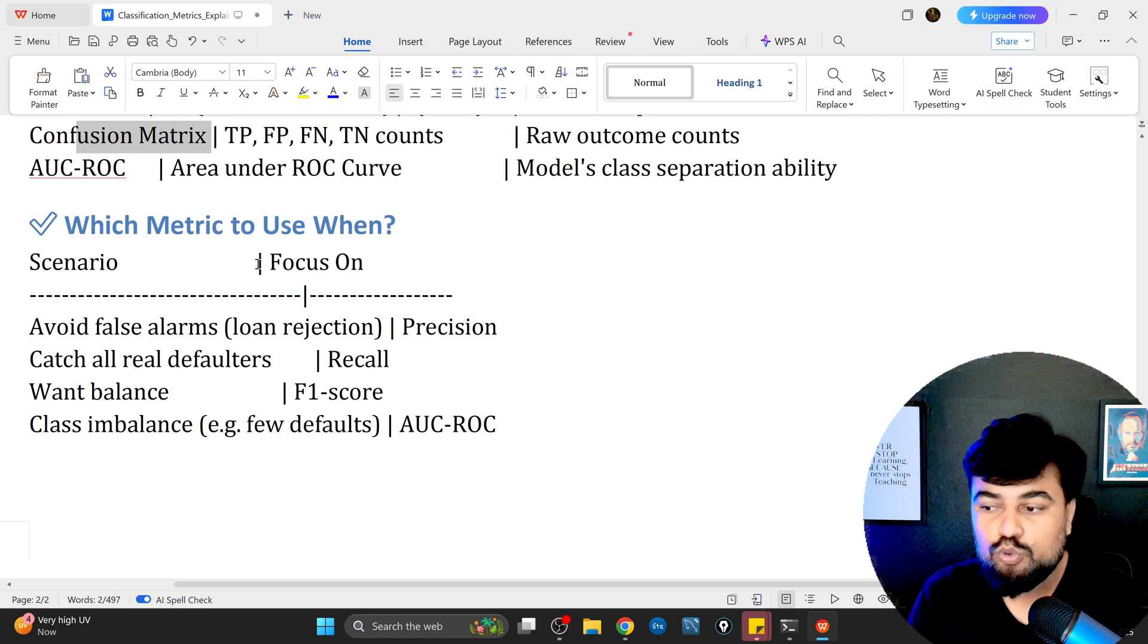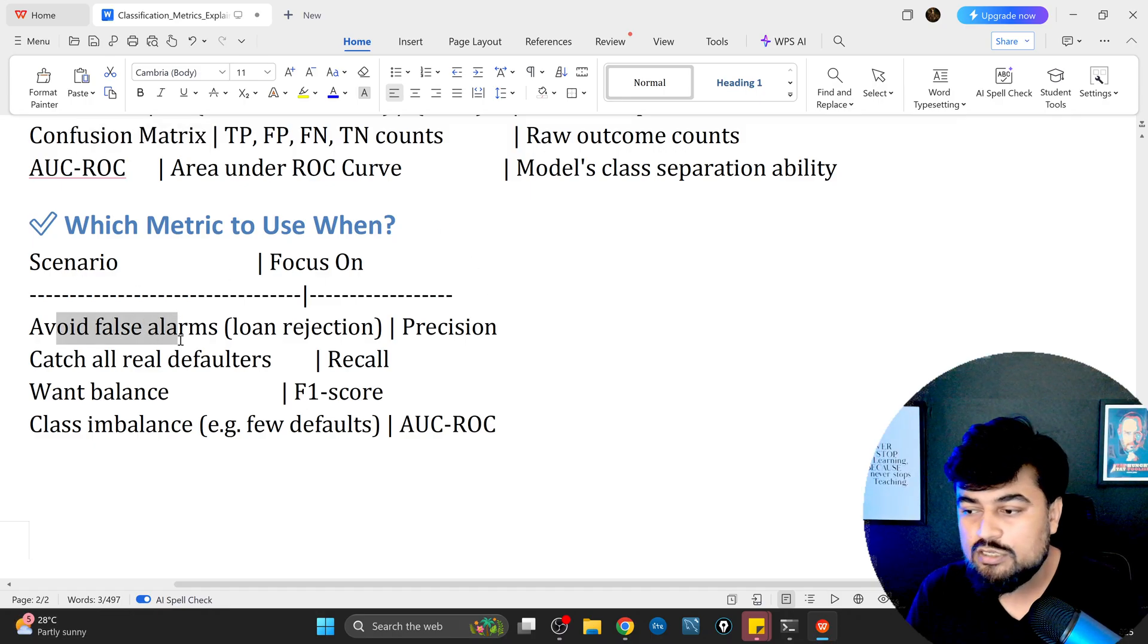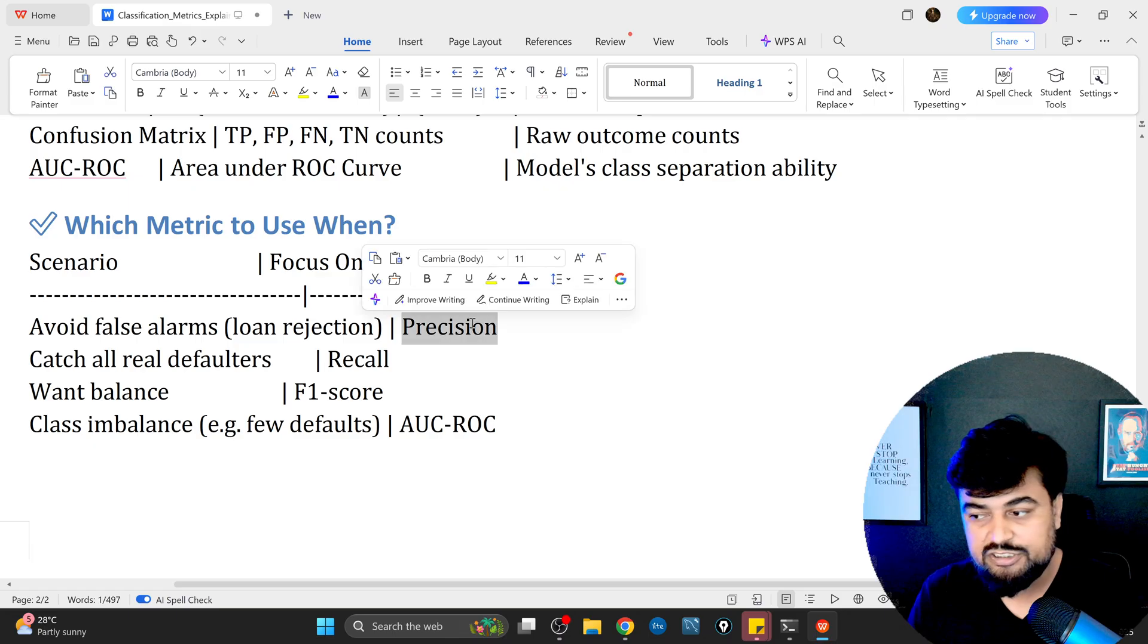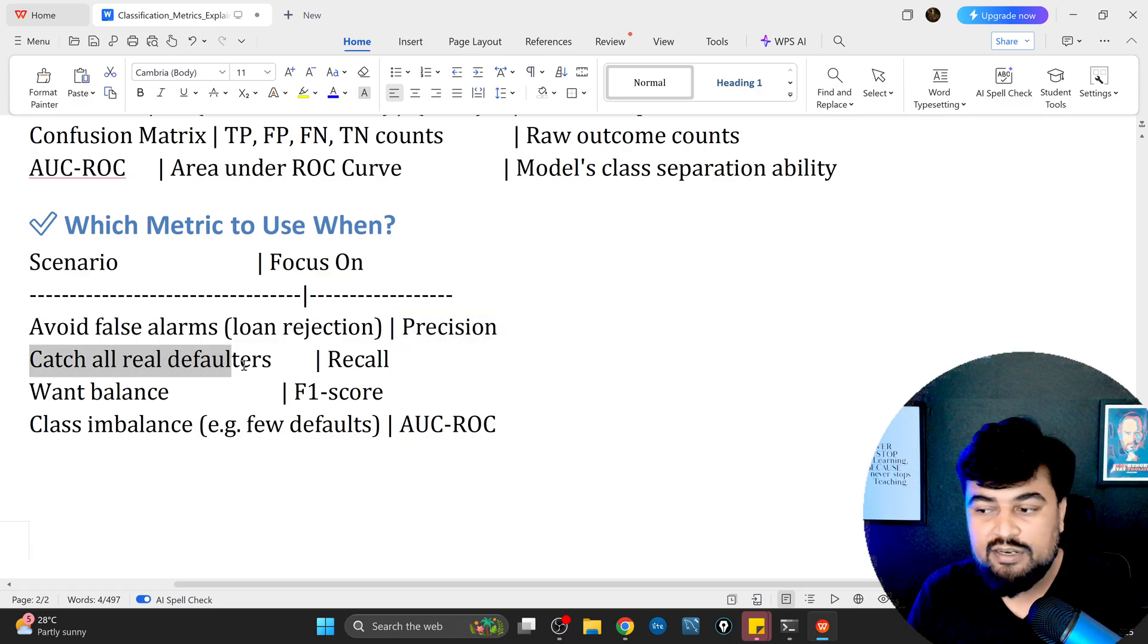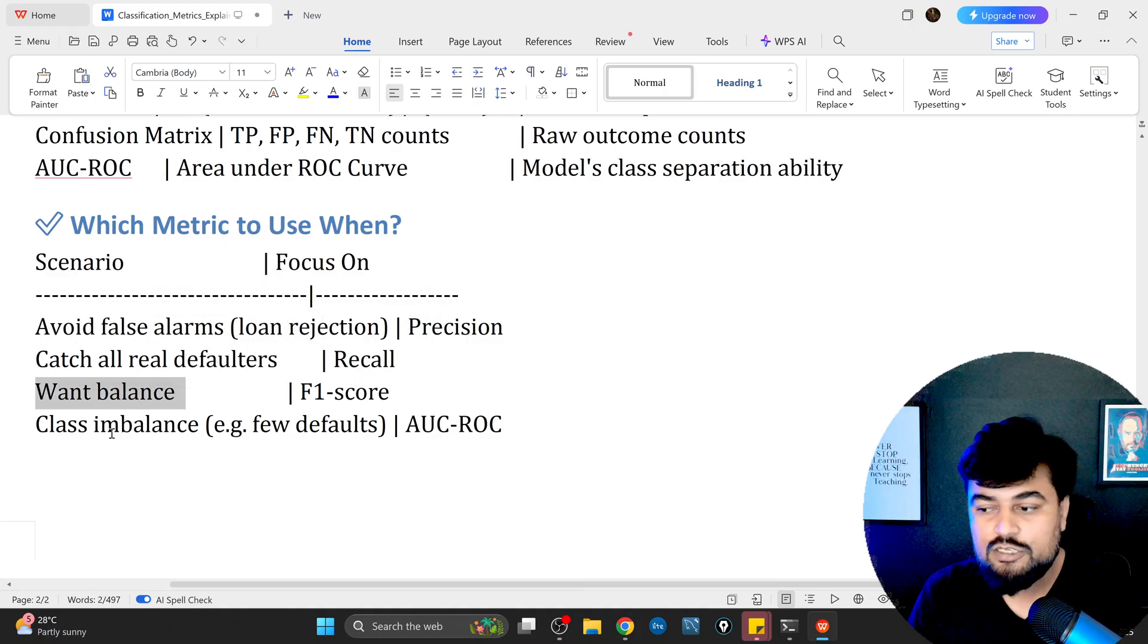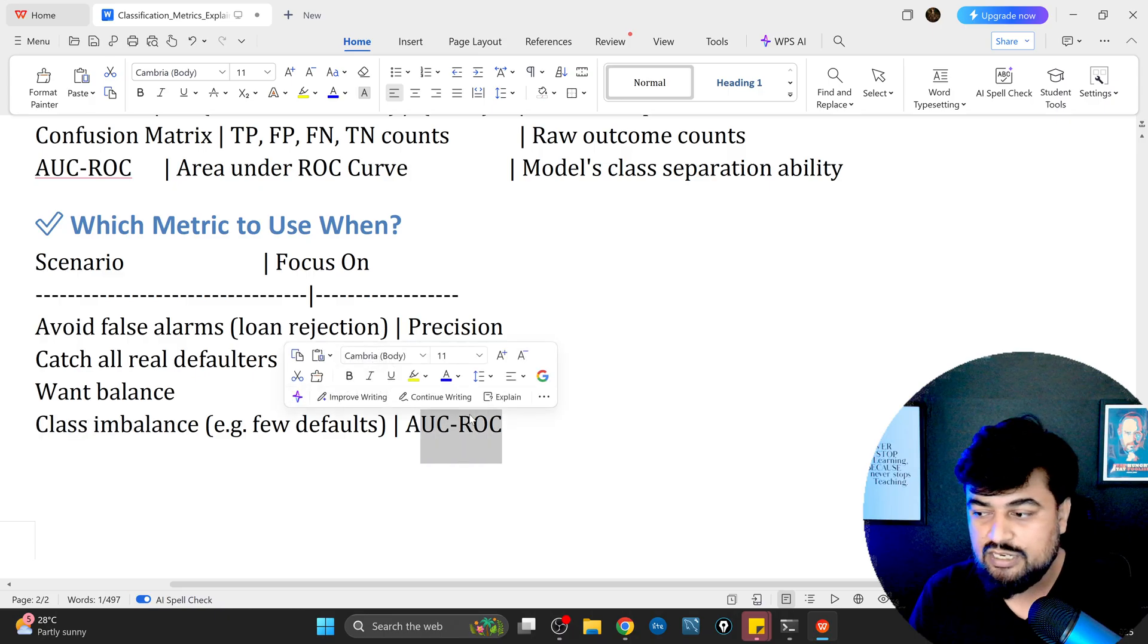Which metrics to use when? That is an important decision. To avoid false alarms in loan rejection, precision is most important. To catch all real defaulters, use recall. If you want a balance, use F1 score. If you have class imbalance, use AUC ROC curve.